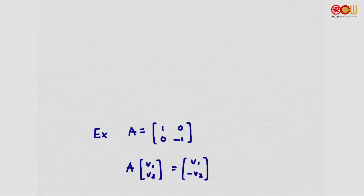Let's first look at an example before we define what eigenvalues and eigenvectors are. Suppose we have an A matrix, a 2 by 2 matrix, and we know if we form the matrix-vector product A and V, then it will be V1 and minus V2.